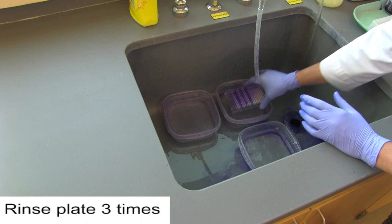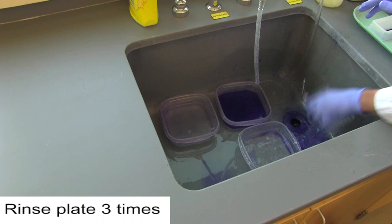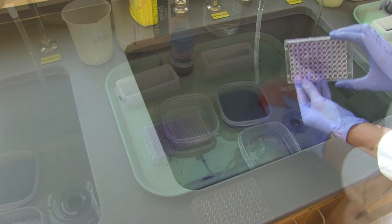With water running, shake out the excess crystal violet, then plunge the plate into the first container, pour out the crystal violet, and repeat with the second and third containers.